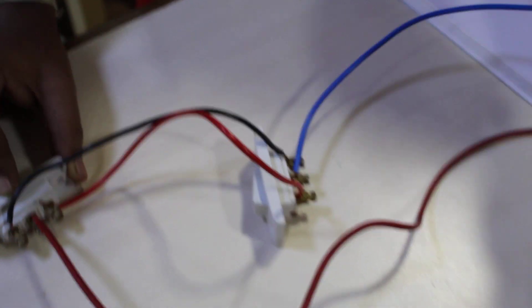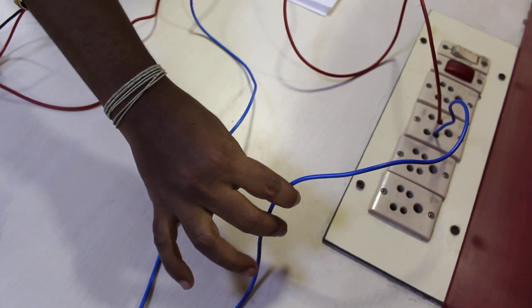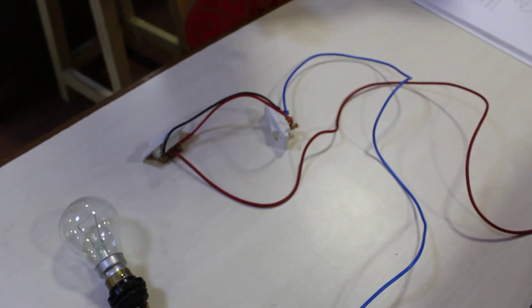From the center point of this it goes to the bulb. From the other end of the bulb it goes to the neutral. Now we will analyze its working.